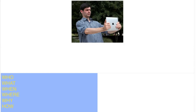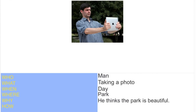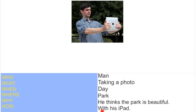For who, you might say a man. For what, you might say taking a photo. For when, you might say during the day. For where, you might say in a park. For why — he thinks the park is beautiful. And how — with his iPad. So we can take these ideas and make a sentence with them. Let's get started.